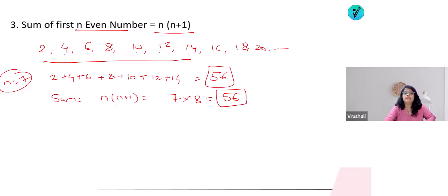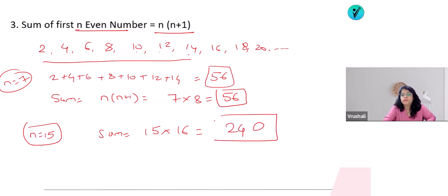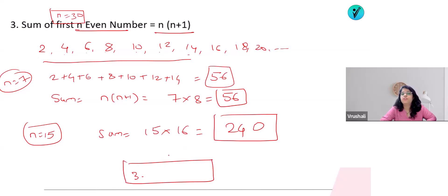For first 15 even numbers: n=15, sum = n(n+1) = 15 × 16 = 240. Answer in the comment box: what is the sum of the first 30 even numbers? The formula gives 30 × 31. You calculate and answer.